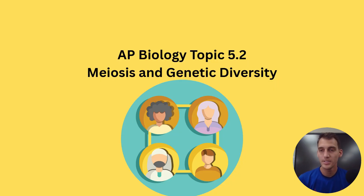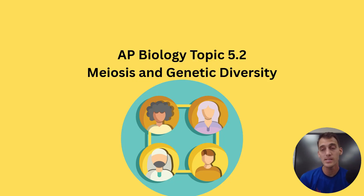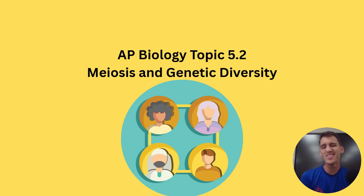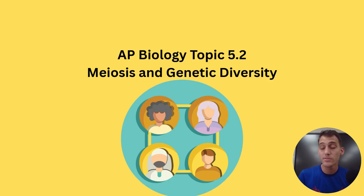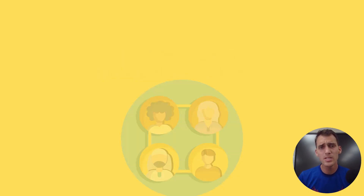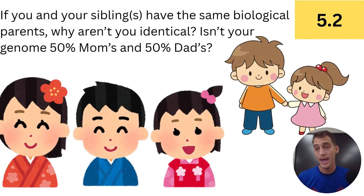Hi everybody, it is your AP Biology teacher here, Mr. Poser. Today we are starting topic 5.2, meiosis and genetic diversity. Our last one was on meiosis — what is it, what are the basics of it, how does it work? It's a type of cell division that produces four haploid non-identical gametes, which are cells used in sexual reproduction. They are non-identical, which means they shuffle up the genes from one generation to the next. Today we're going to be talking about how that happens.